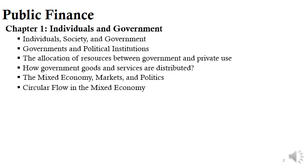After the allocation of resources between government and private use, we turn to how government goods and services are distributed. Government goods and services are distributed to groups of individuals through non-market rationing — they are not made available according to willingness to pay, and their use is not rationed by prices.